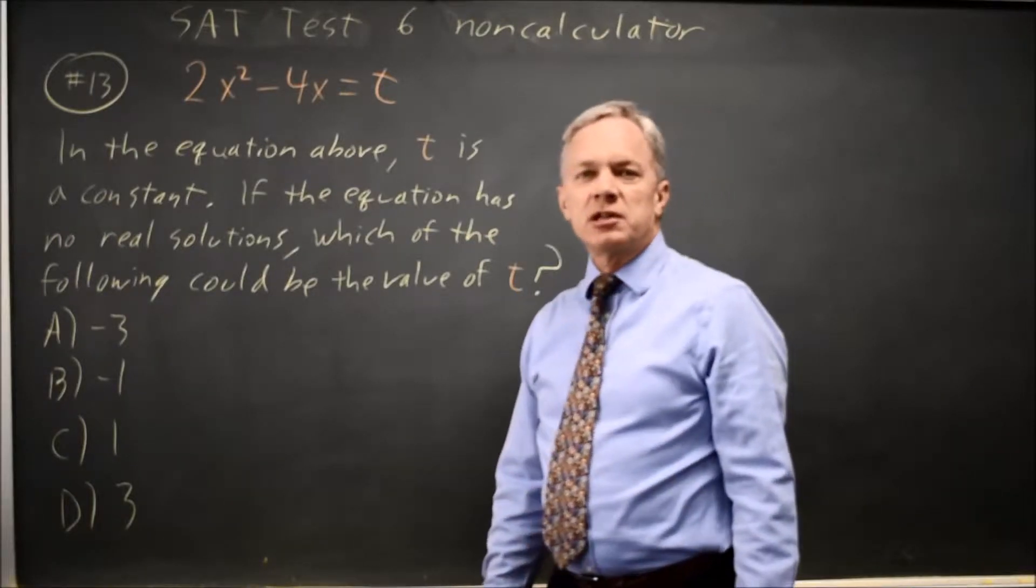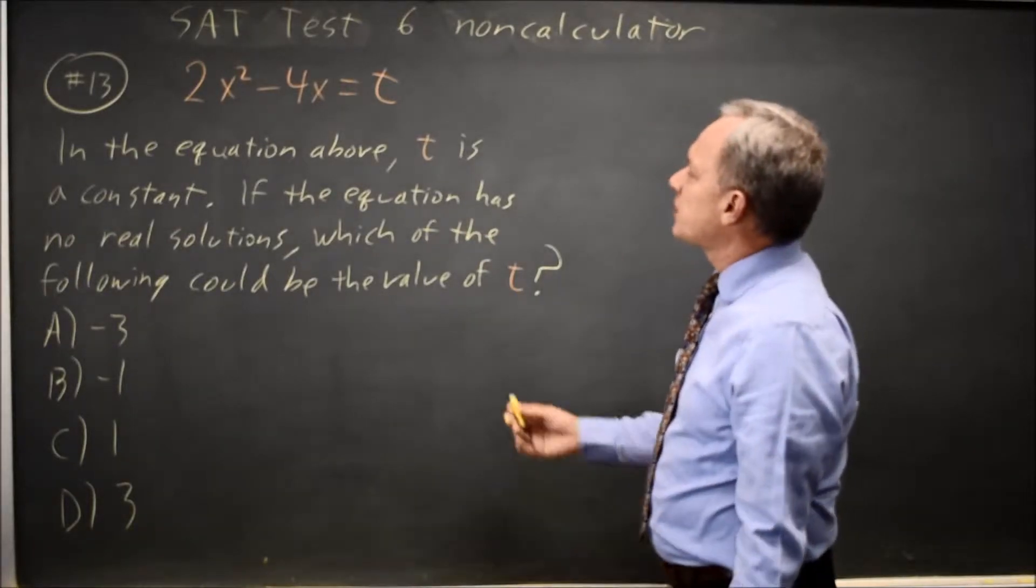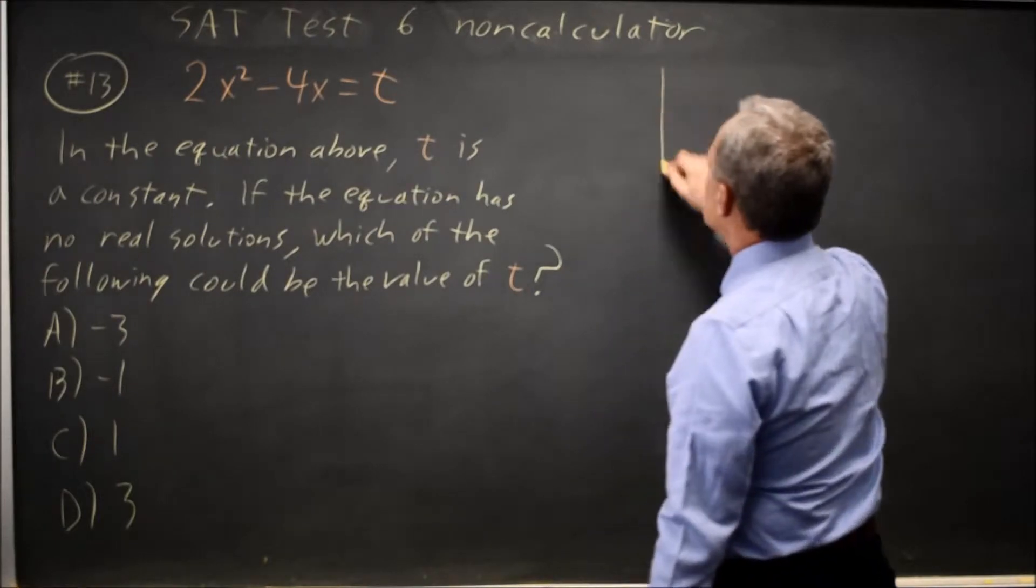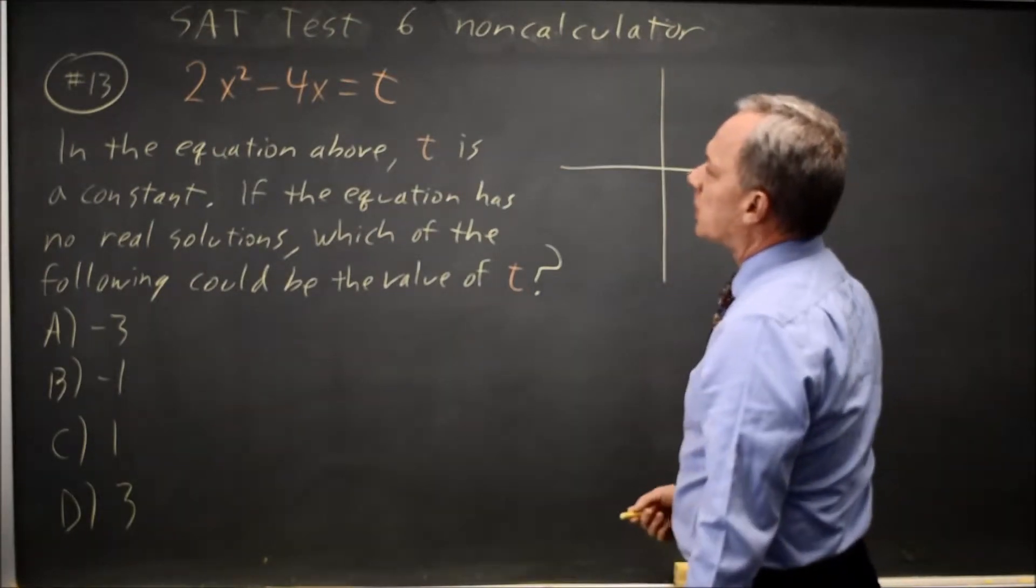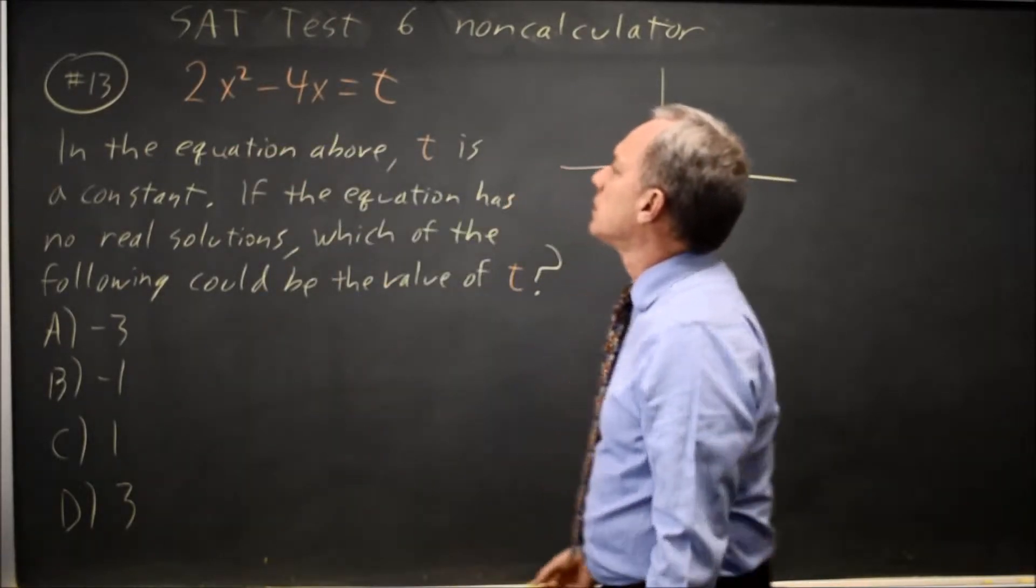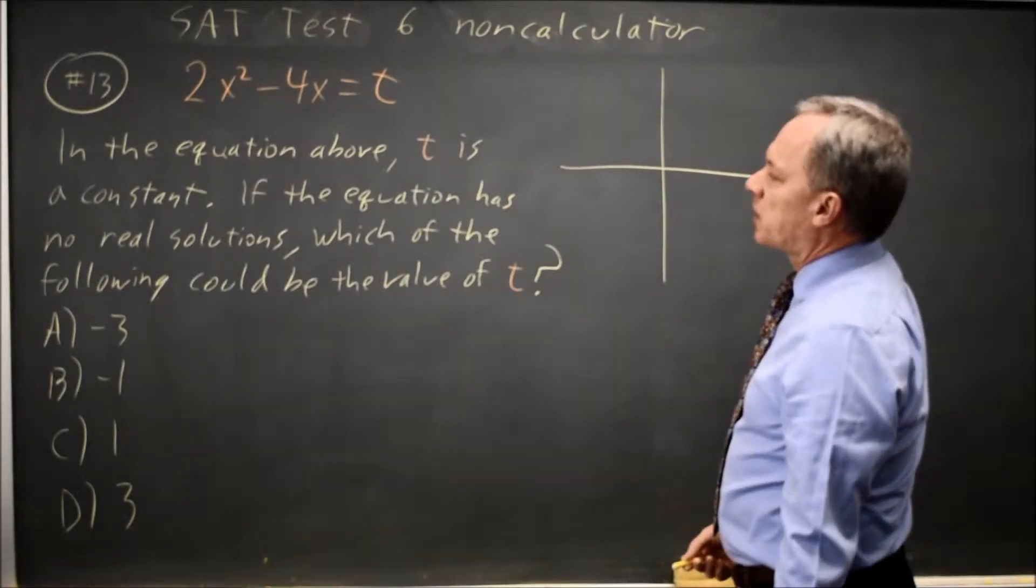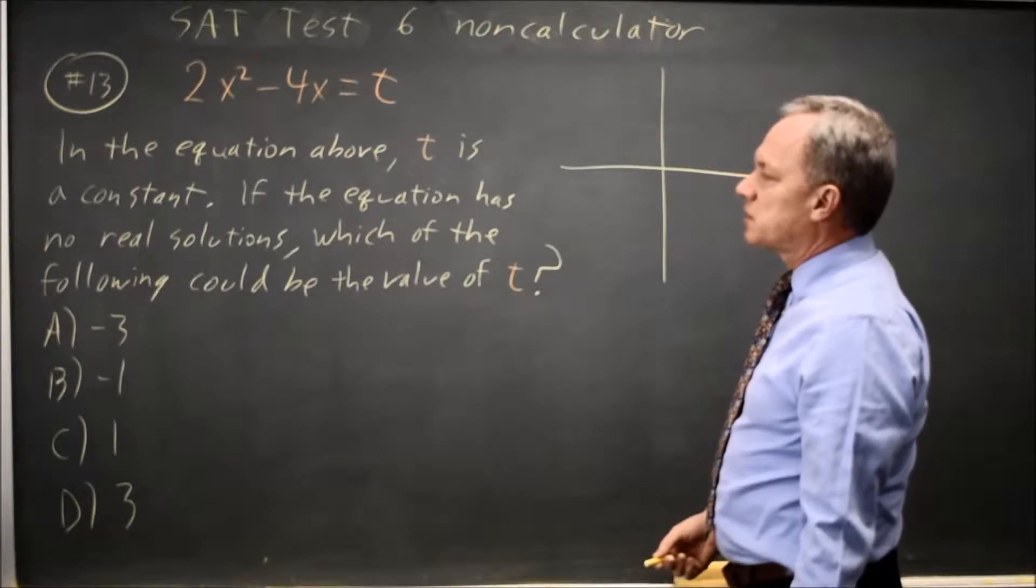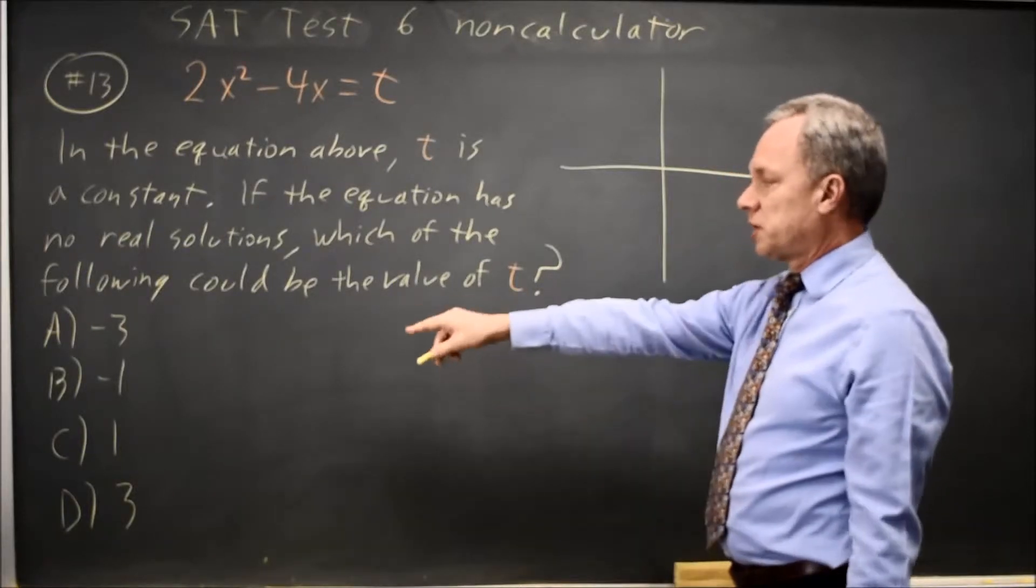There are three basic ways of solving this. The fastest and easiest is by considering the graph. I have a parabola that opens up, and they're saying this parabola does not intersect one of these values.